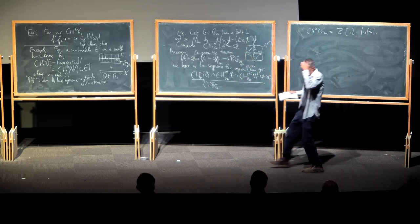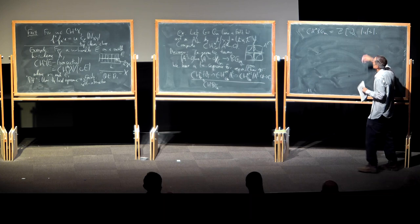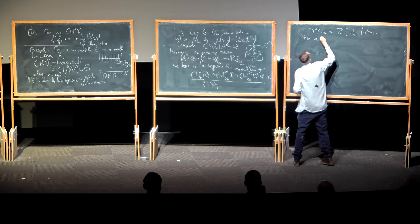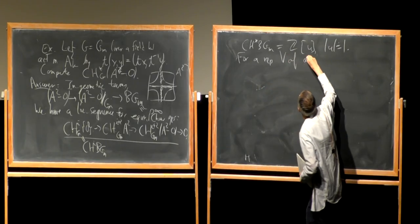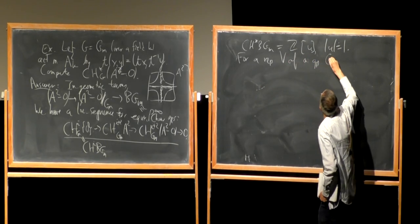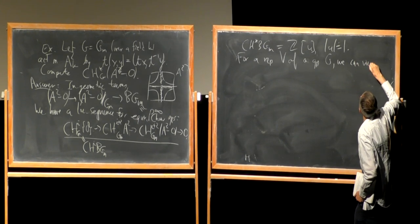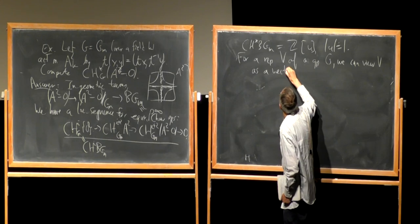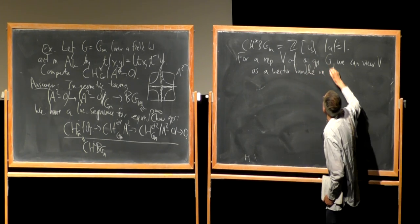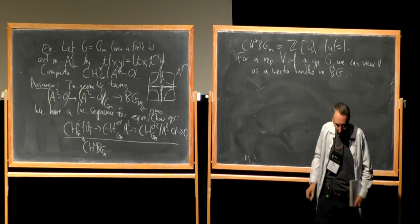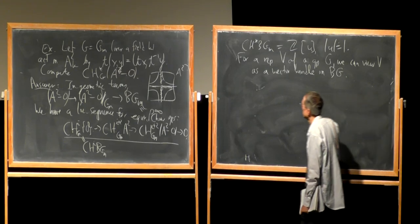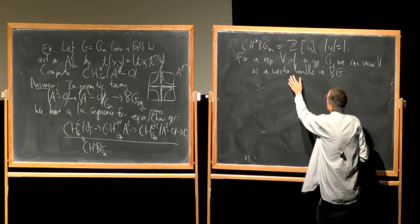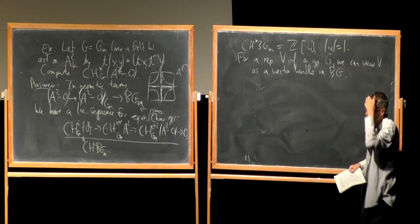I can give this generator a good name. For any representation V of an algebraic group G, we can view V as determining a vector bundle on BG — geometrically, you look at V×EG/G, which maps to EG/G = BG with fiber V. This is not a trivial bundle; it's a vector bundle of the same rank as V, and what bundle it is depends on how G is acting on V.